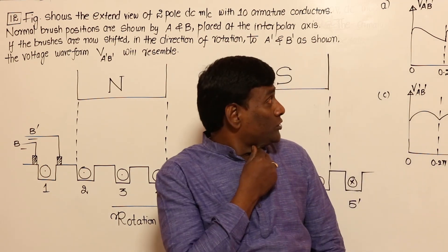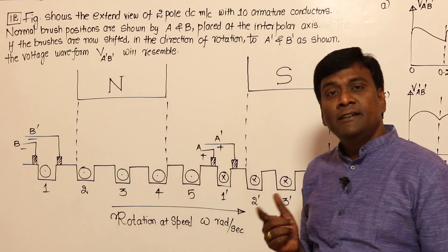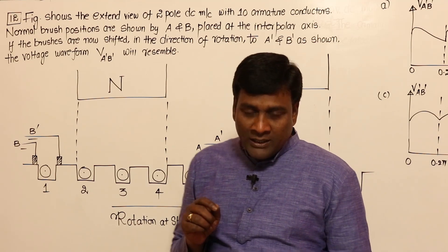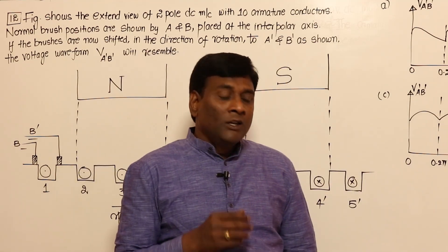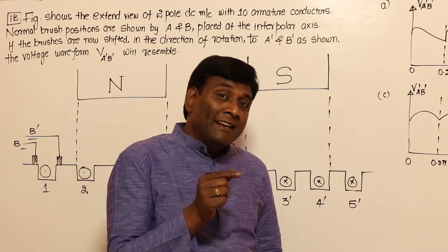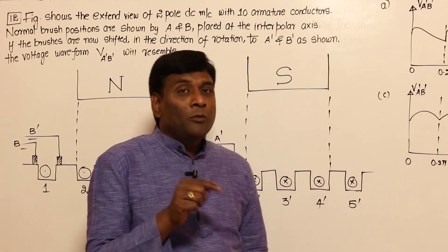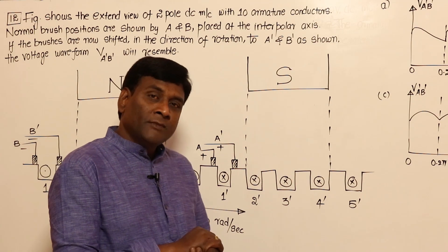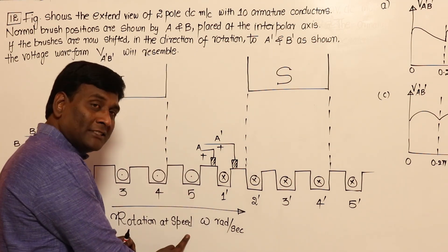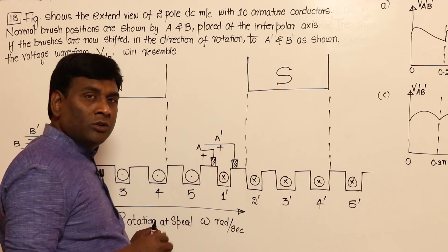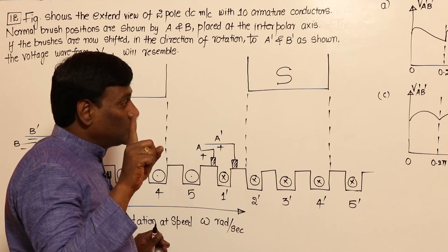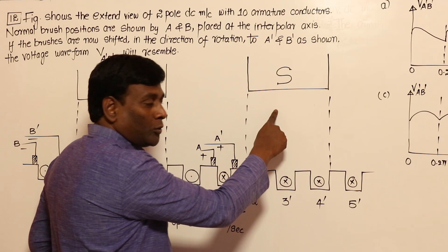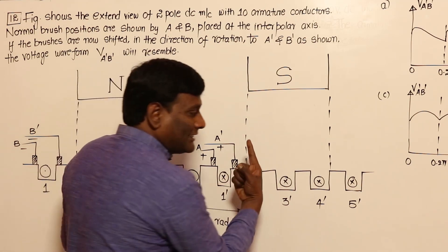We have to understand one thing: did they give voltages or currents? They did not give any information, so we have to find out ourselves. If it's a generator, direction of current will be aligned with the induced voltage direction; in a motor, direction of current will be against the induced voltage. Direction of rotation is given and the poles we know, so using Fleming's right-hand rule - flux we know, direction of motion of conductor we know - we can find the induced voltage.